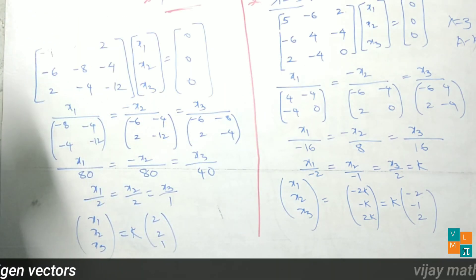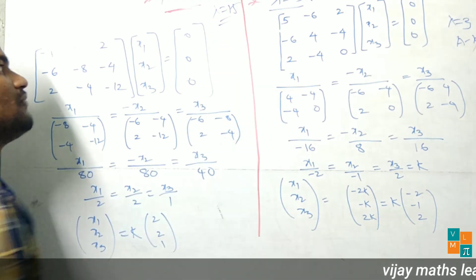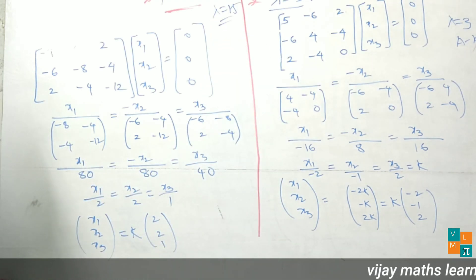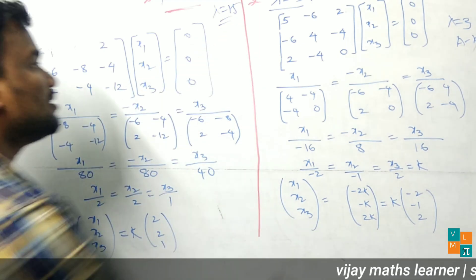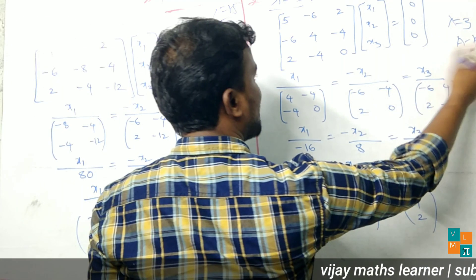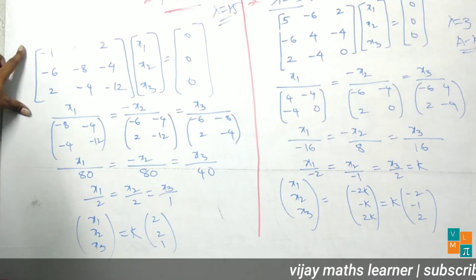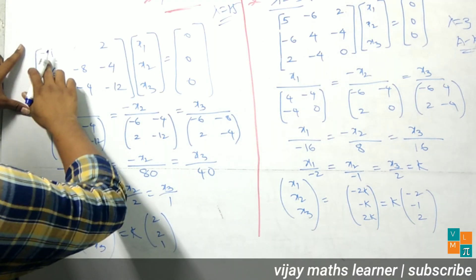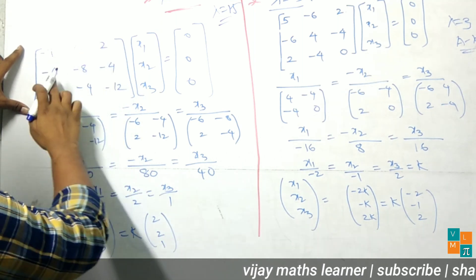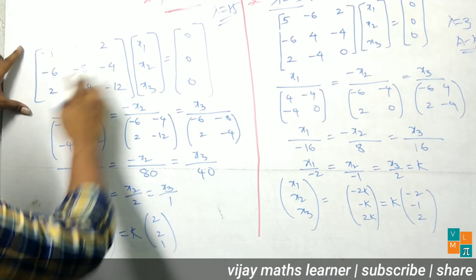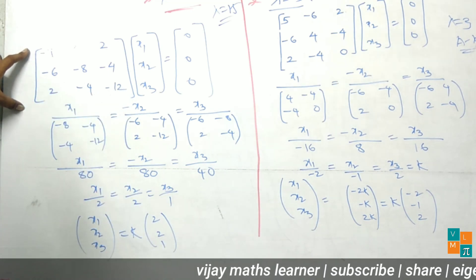Next, lambda equal to 15. We find the eigenvector corresponding to eigenvalue lambda equal to 15. Substituting lambda equal to 15 into matrix A minus lambda I, the entries are: -7, -6, 2, -6, -8, -4, 2, -4, -12. This is the value of A minus lambda I.